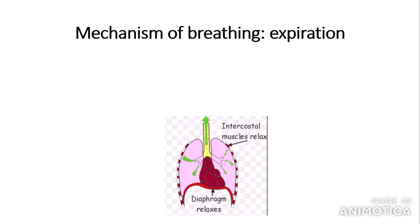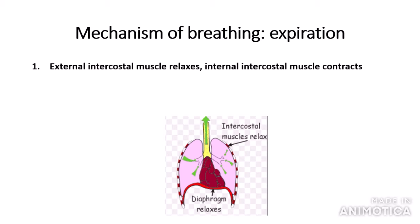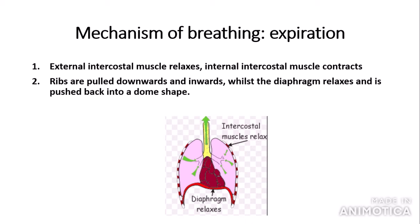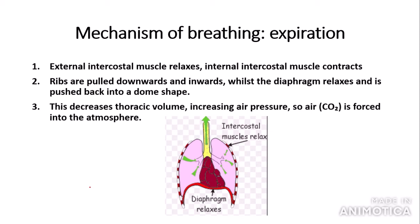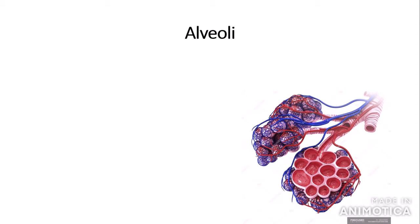During expiration — breathing out — the process is reversed. The external intercostal muscles relax whilst the internal intercostal muscles contract. The ribs are pulled downwards and inwards whilst the diaphragm relaxes and is pushed back into a dome shape. This decreases the thoracic volume, therefore increasing the air pressure, so air — or carbon dioxide — is forced out into the atmosphere down the pressure gradient.